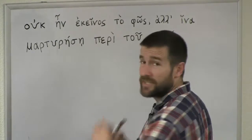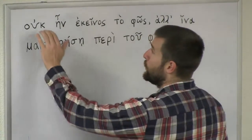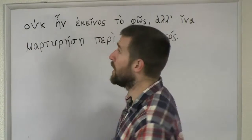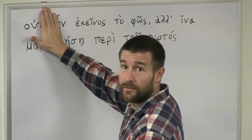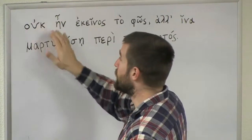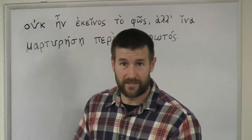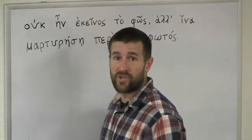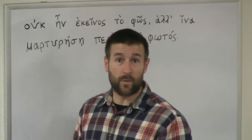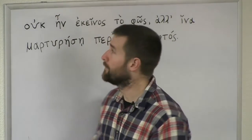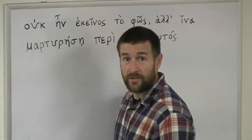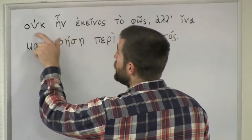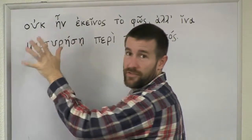Let's look at this word by word in Greek. 'Ouk' is another form of the word we've already seen, 'ou'. Ouk means 'not'. 'Ēn' means 'was' — you should remember that from John 1:1, 'In the beginning was the Word.' So ouk ēn means 'was not'.